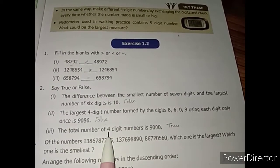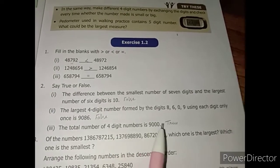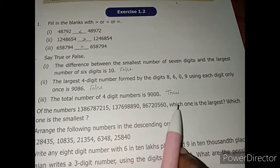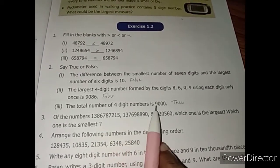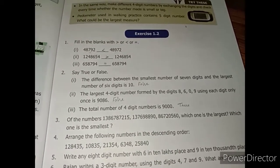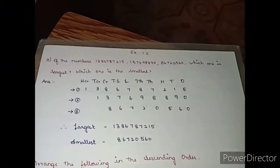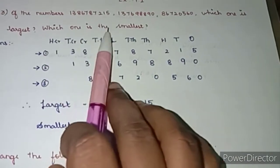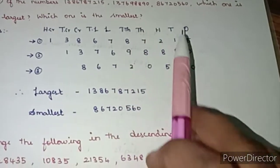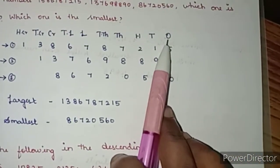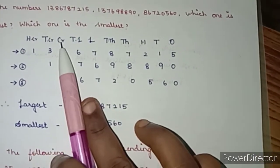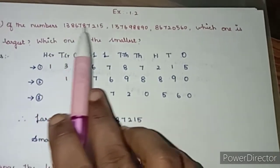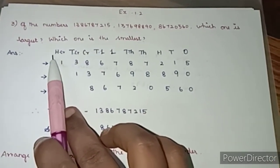The total number of 4-digit numbers is 9,000 — yes, it is true. Of the three numbers given, find which is the largest and which is the smallest. We are going to write a place value chart with ones, ten, hundred, thousand, ten thousand, lakh, ten lakh, crore, ten crore, hundred crore. They have not differentiated with commas, so we use the Indian system.